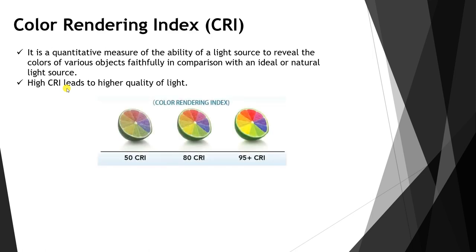A higher CRI leads to a higher quality of light. For example, a luminaire with a CRI of 50, another with 80, and another with greater than 95 — as you can see, as the Color Rendering Index increases, we can see the object with its own real colors. Comparing a CRI of 50 to 95, you can clearly see the object's real colors at higher values.